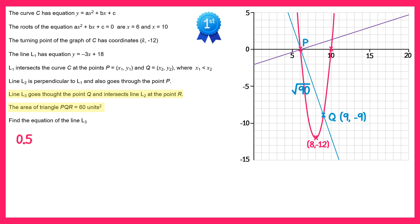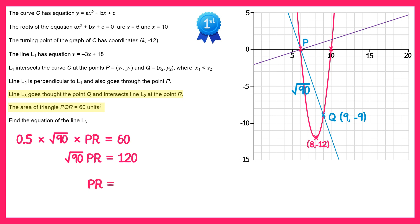We can work out the length of PQ using Pythagoras. PQ squared equals 3 squared plus 9 squared, which equals 90, so PQ equals square root 90. This is one length of the triangle; we also need the perpendicular length PR, which we don't know yet. Using the area formula: one half times square root 90 times PR equals 60. Multiplying both sides by 2 gives square root 90 times PR equals 120, so PR equals 120 divided by square root 90.